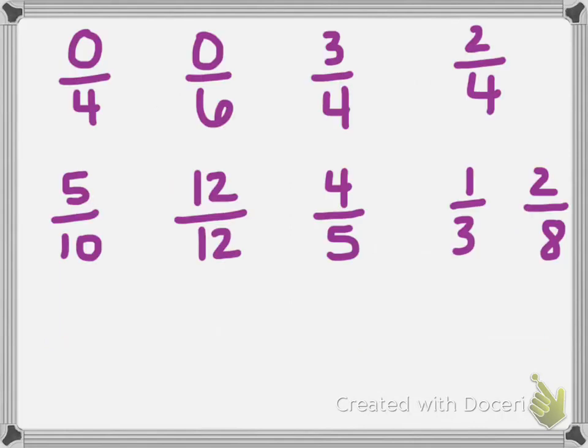These are the fractions that we're going to be looking at. We have 0 fourths, 0 sixths, 3 fourths, 2 fourths, 5 tenths, 12 twelfths, 4 fifths, 1 third, and 2 eighths.